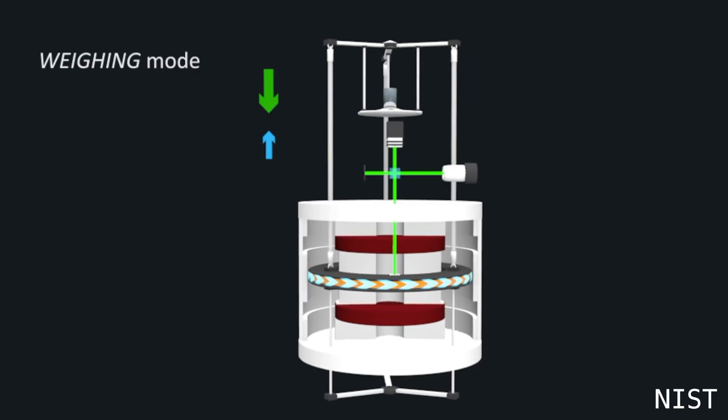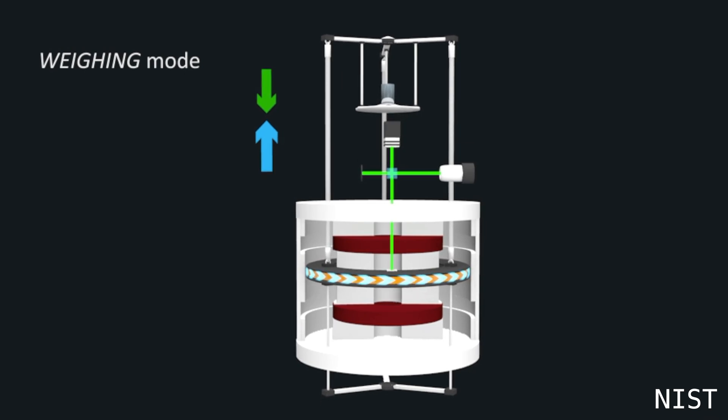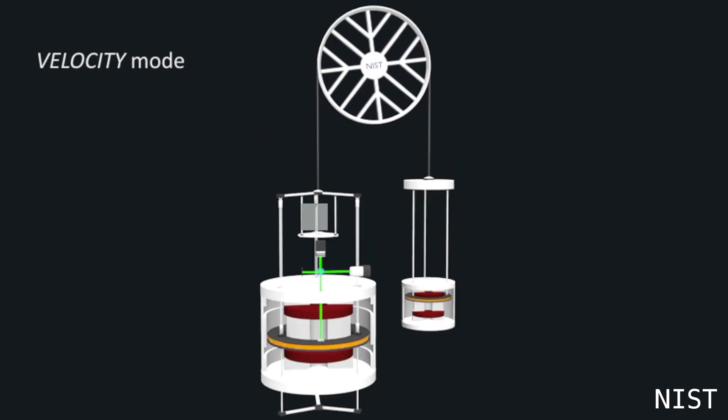But the kibble balance has a way to work around this, by using a different measuring mode. What I just described was aptly named weighing mode. The second mode is called velocity mode.